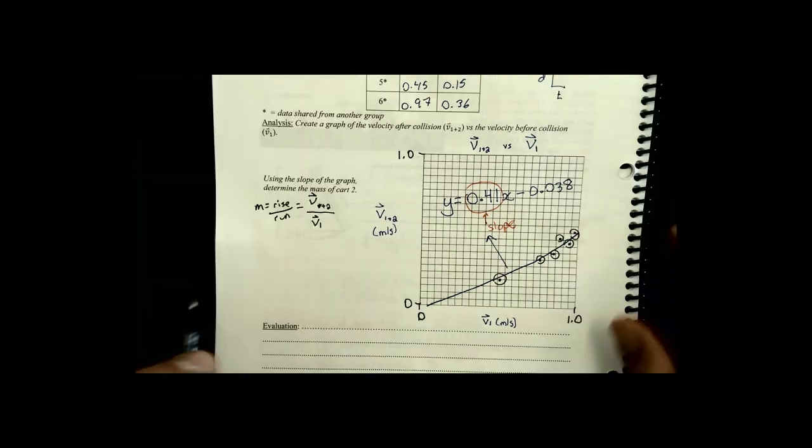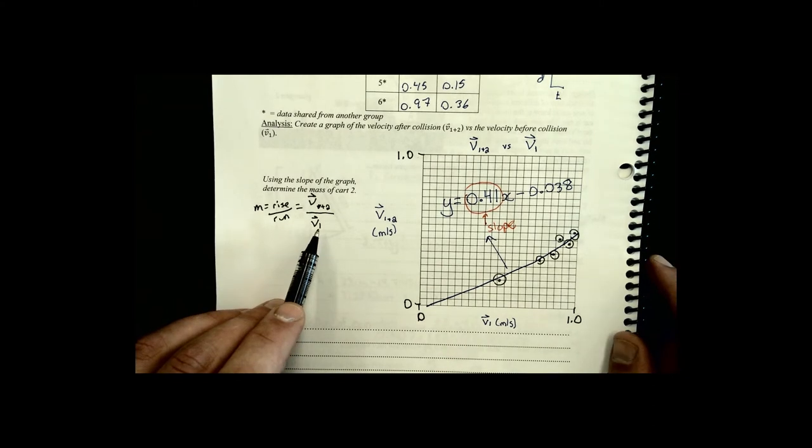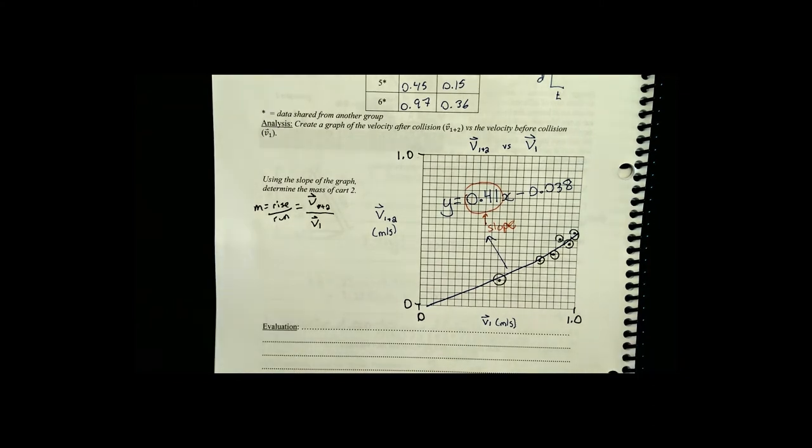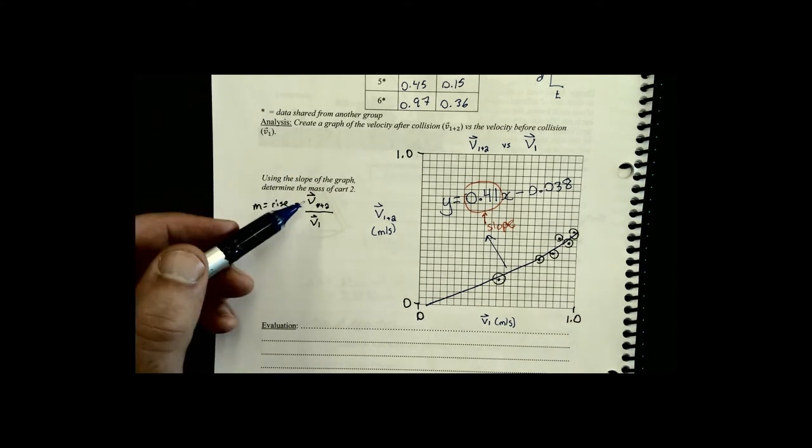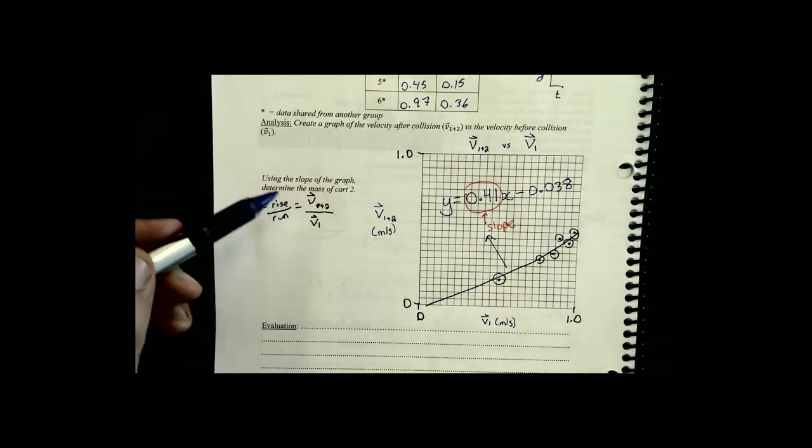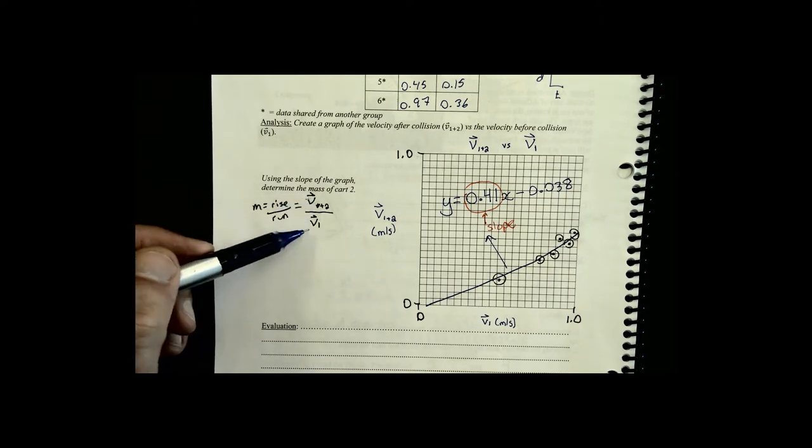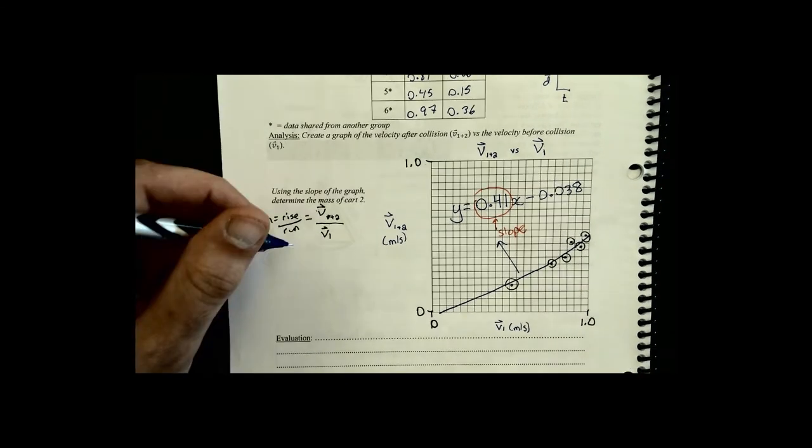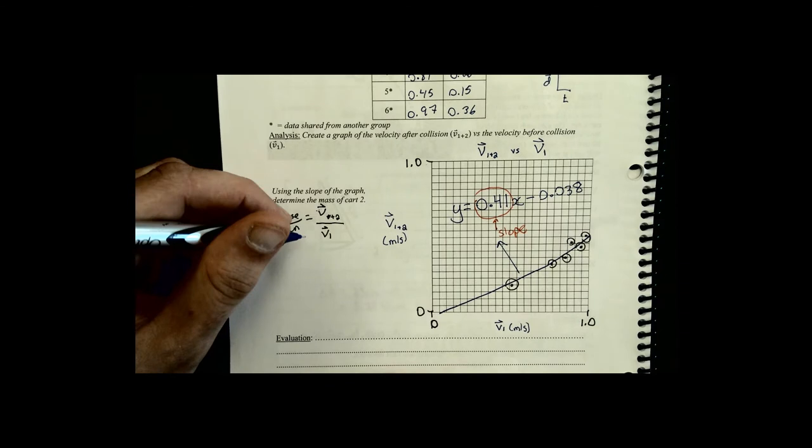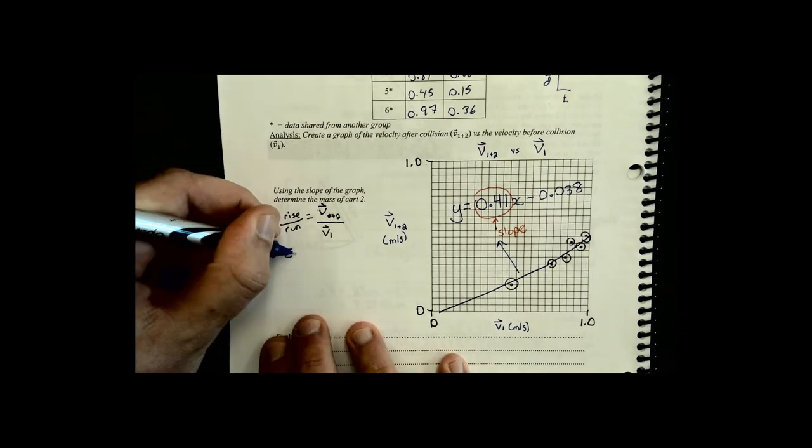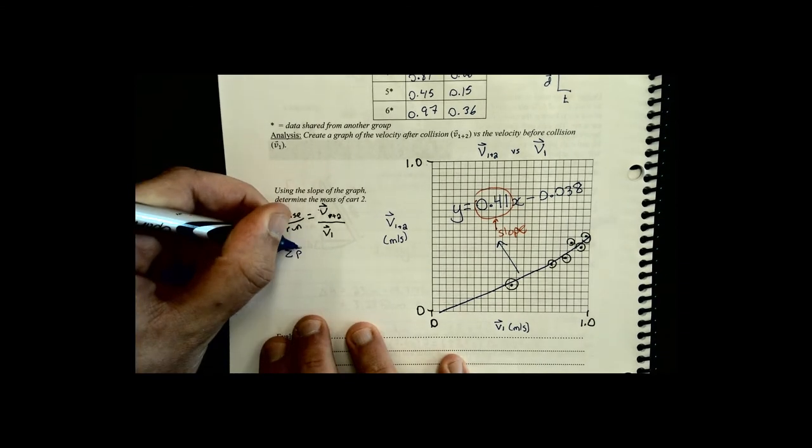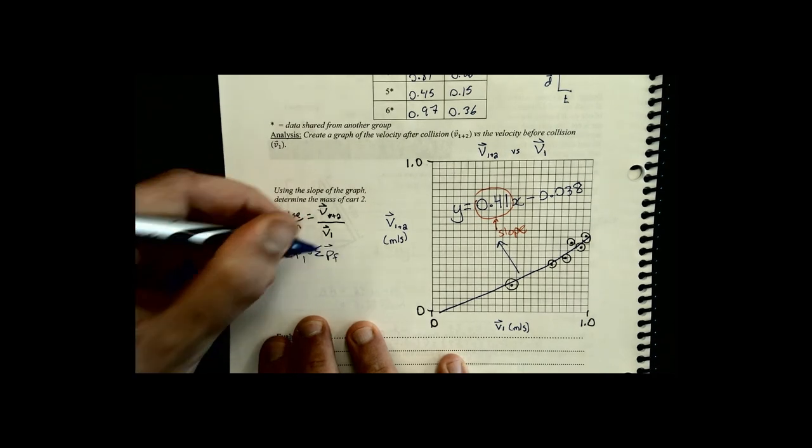But the problem is there's no formula on the formula sheet that says v1 plus 2 over v1. We can't just match it up really easily. But that's okay. We can make a formula. We're going to see if we can put together a formula knowing what we know about the conservation of momentum and see if in that formula we can manipulate it until we get v1 plus 2 over v1.